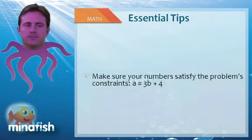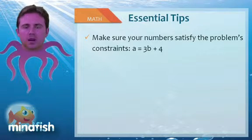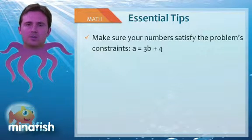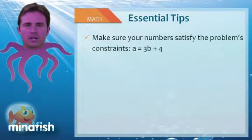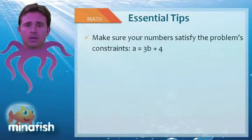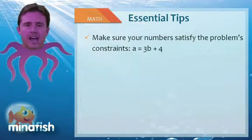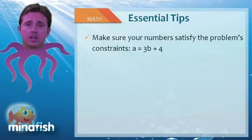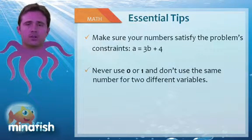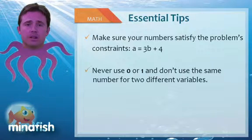So some essential tips. You have to make sure that the numbers you pick satisfy the constraints of the problem. You can't just arbitrarily pick numbers. While you should keep them as small as possible, fulfill the constraints of any constraint that they give you. So if they say A equals 3B plus 4, and we make B equal to 6, we don't have a choice. A has to be 22. And then we can go on and solve the problem from there. Never use the number 0 or 1. And really try hard not to use the same number for two different variables, if at all possible.